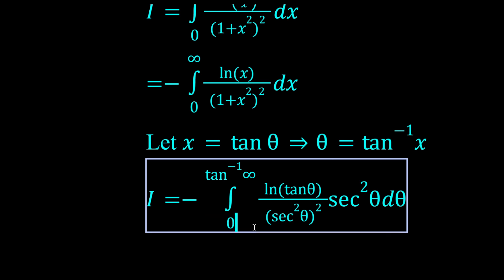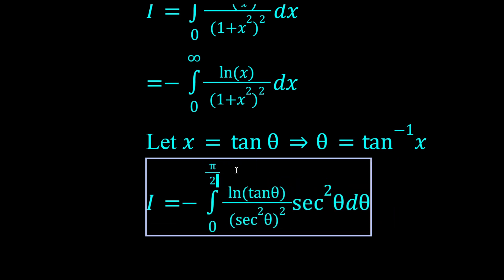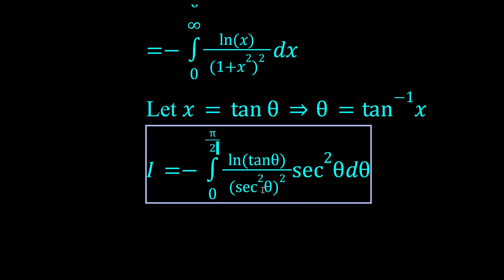Firstly, the bounds would become 0 to π/2, because the inverse tan of infinity approaches π/2. That was a bad notation, but it is what it is.